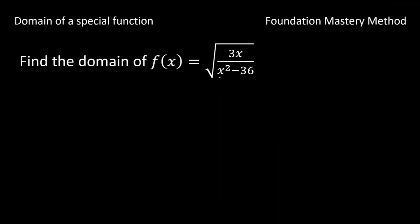We take a second example, slightly different. Now we have a square root of 3x over x squared minus 36. 3x over x squared minus 36 should be greater than or equal to 0.